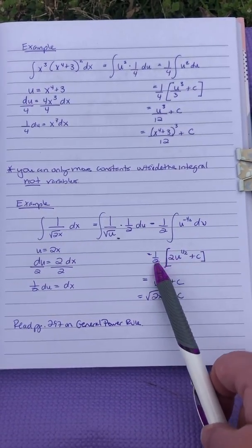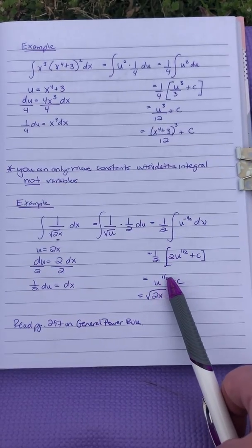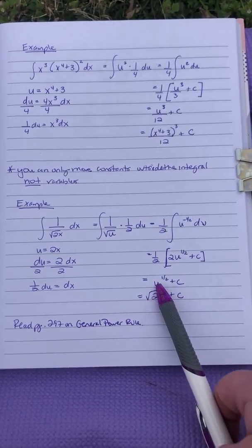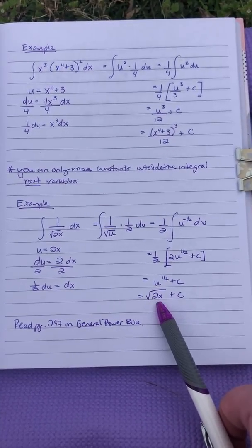So the one half and the 2 right here are going to cancel each other out, and you're left with u to the one half plus c. And then you can rewrite that as square root of 2x plus c.